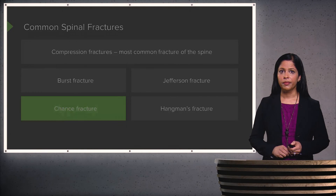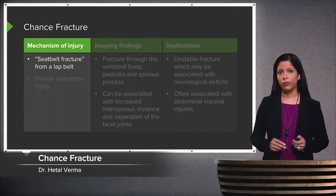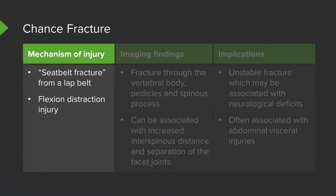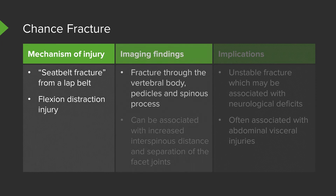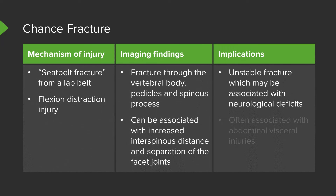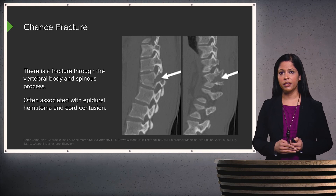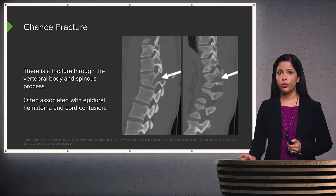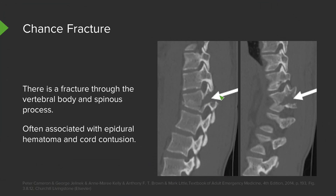A chance fracture, also called a seat belt fracture, is usually caused by a lap belt in a motor vehicle accident. This is a type of flexion-distraction injury with fracture through the vertebral body, the pedicles, and the spinous process. It can be associated with increased interspinous distance and separation of the facet joints, making it a very unstable fracture that can cause neurological deficits. It's also often associated with abdominal visceral injuries due to the lap belt, as well as epidural hematoma and possibly cord contusion. Two CT sagittal images demonstrate fracture through the vertebral body and spinous process, confirming the chance fracture.